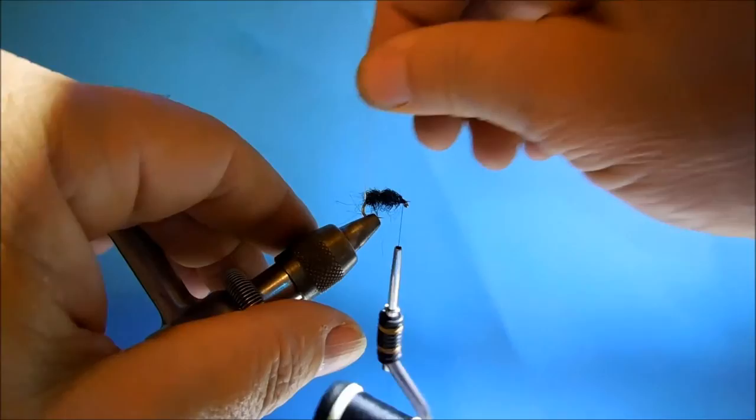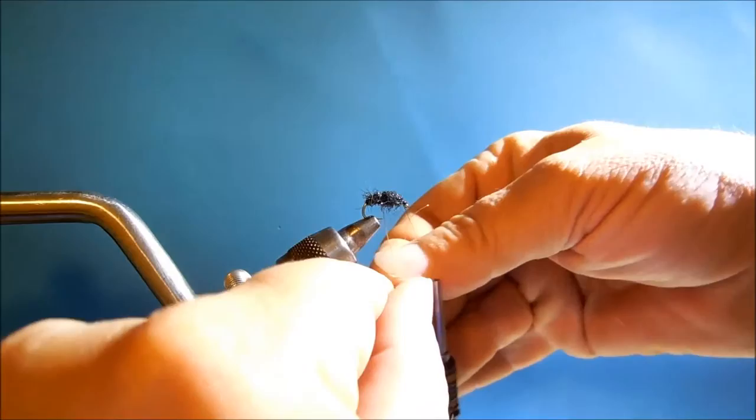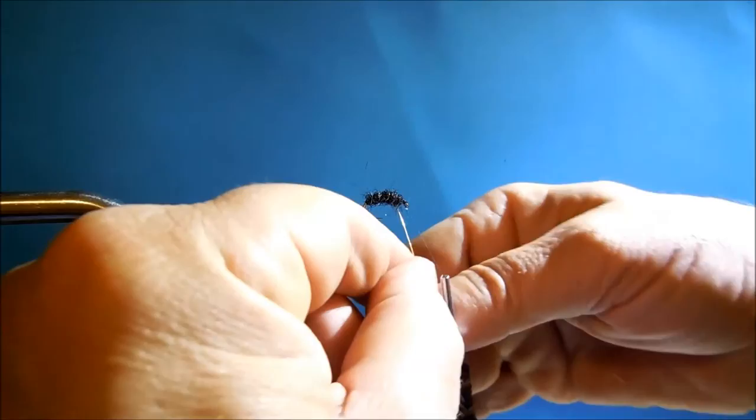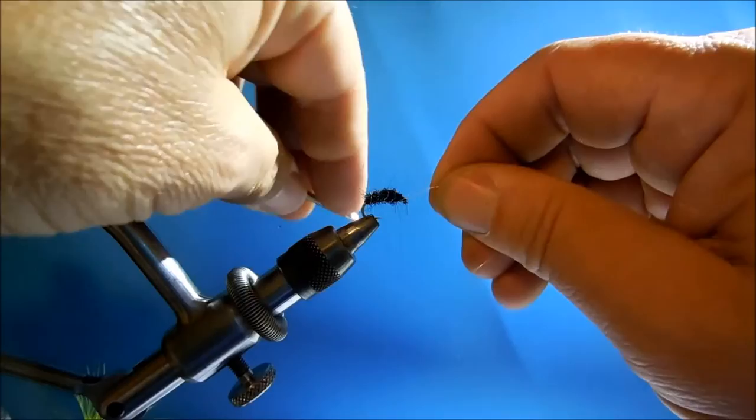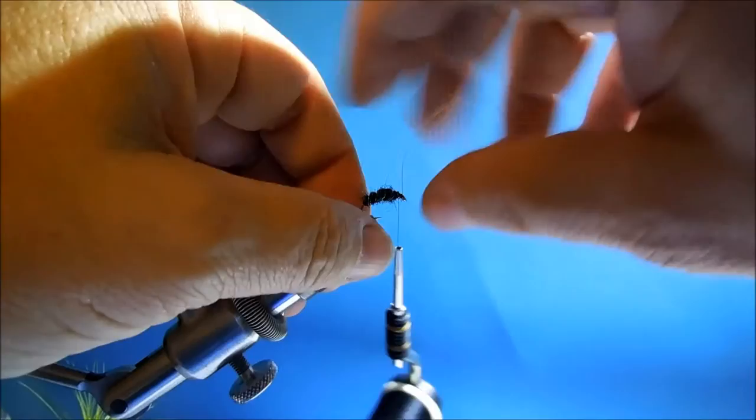Now, with the wire, we can go back the other way and just counter wrap. Probably, maybe four ribs. Maybe five. Not the prettiest of flies. But trust me, it doesn't matter.